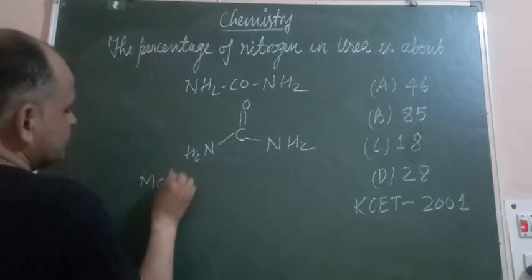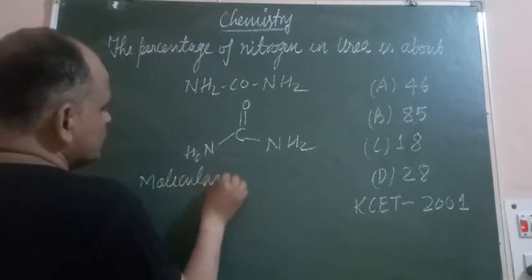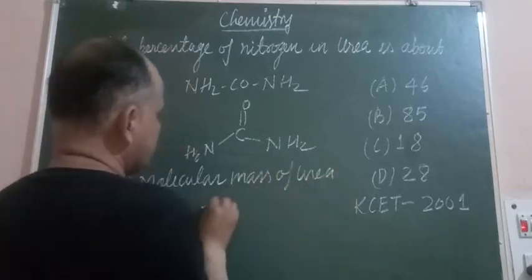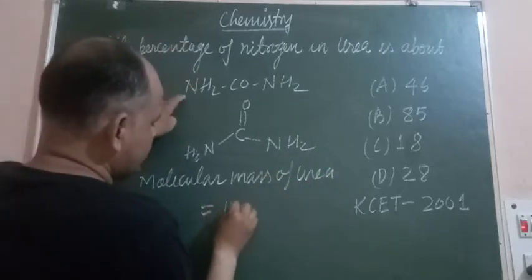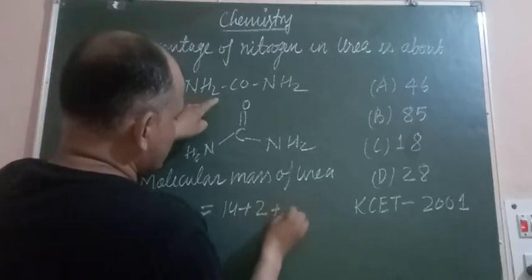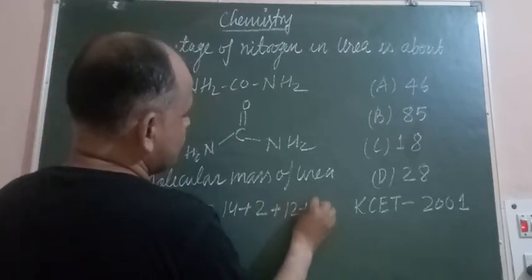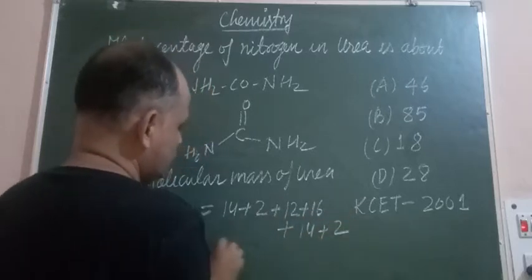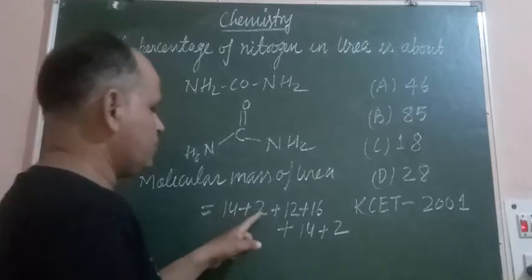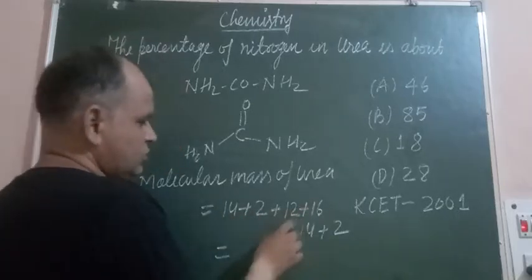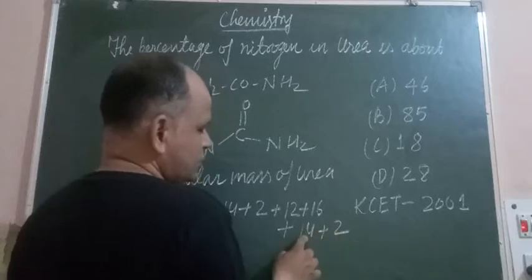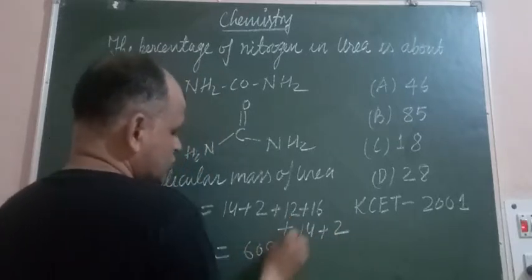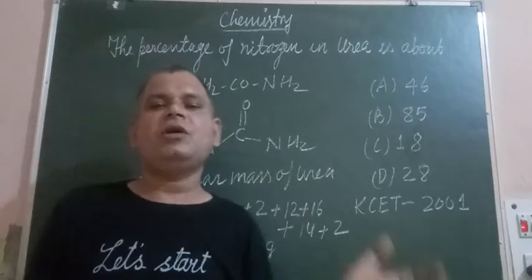The molecular mass of urea: nitrogen is 14, hydrogen is 2×2 = 4, carbon is 12, oxygen is 16, plus another nitrogen 14 and H₂. So that is 28 plus 4 plus 12 plus 16, giving us 60. So 60 grams is the molecular mass of urea.